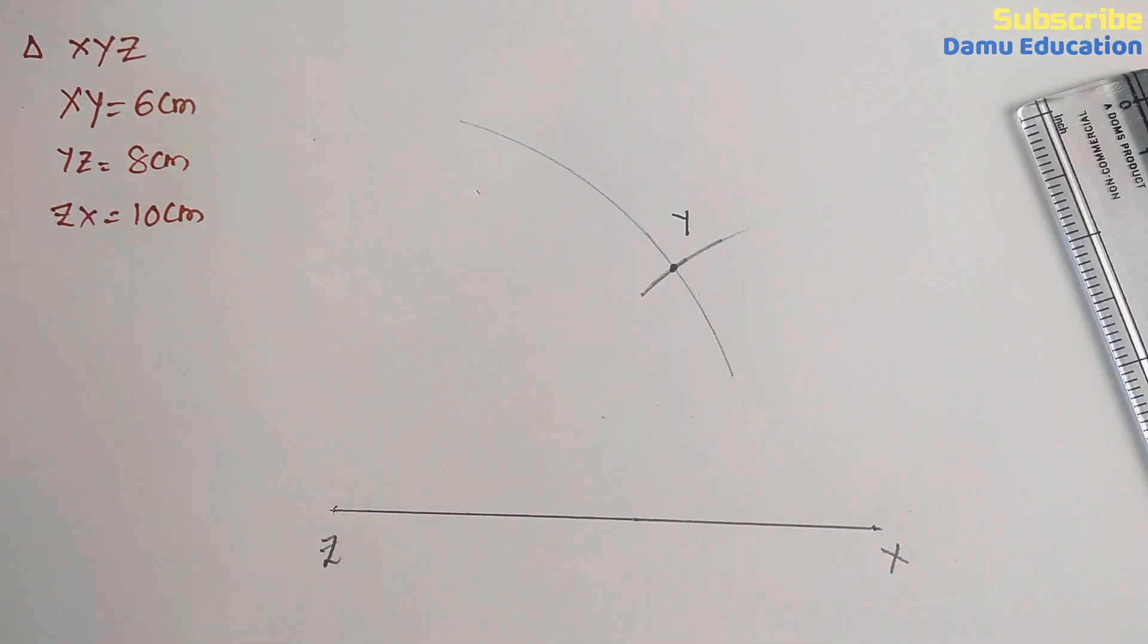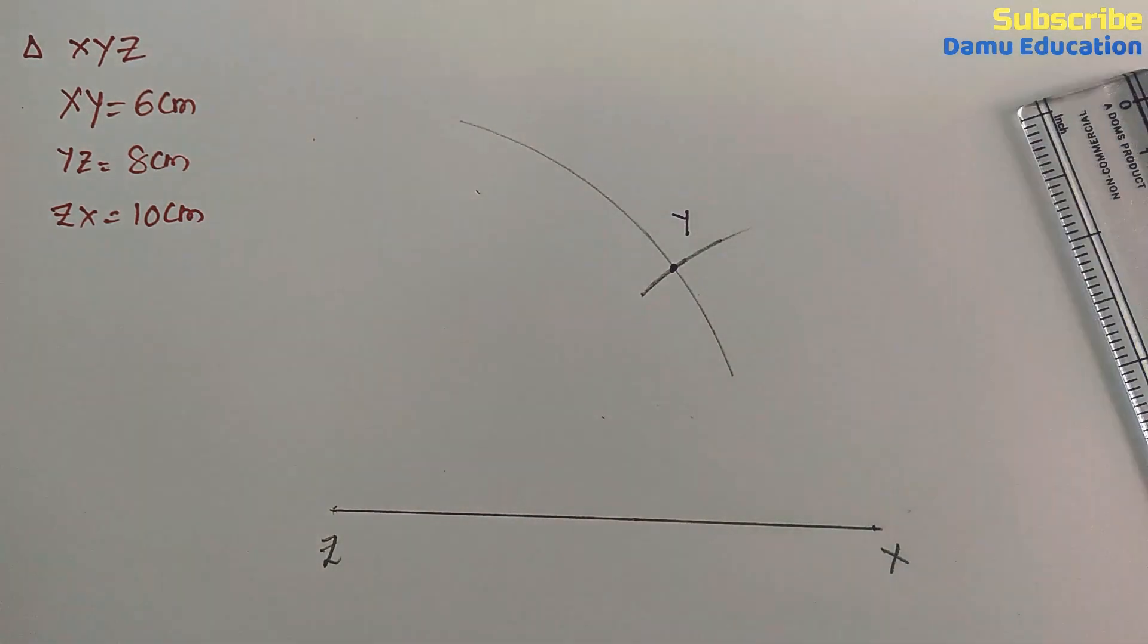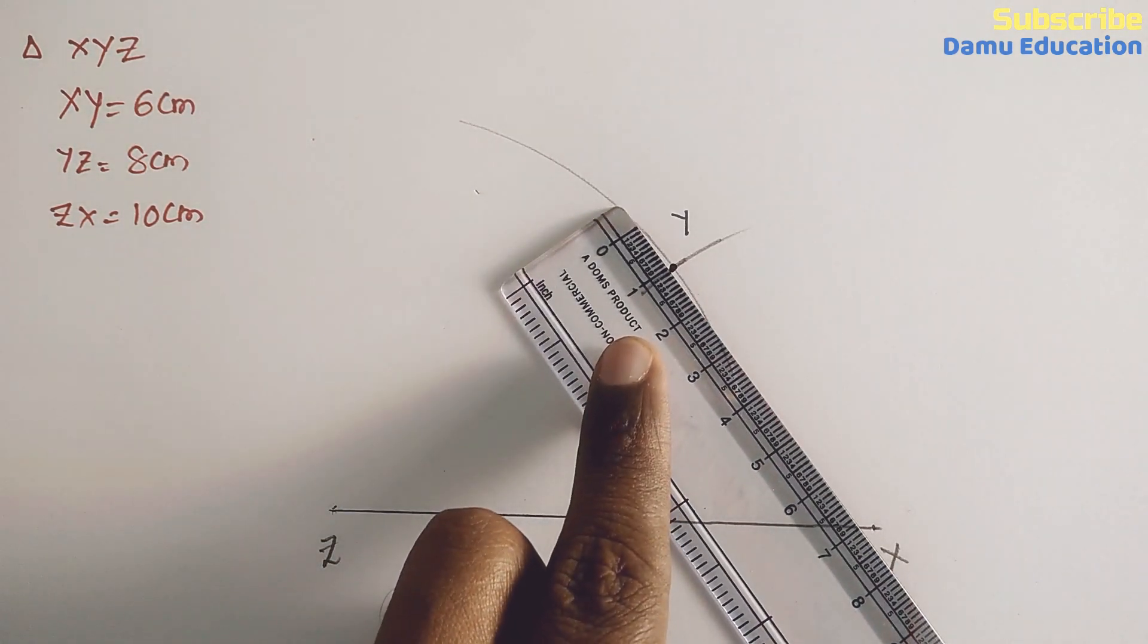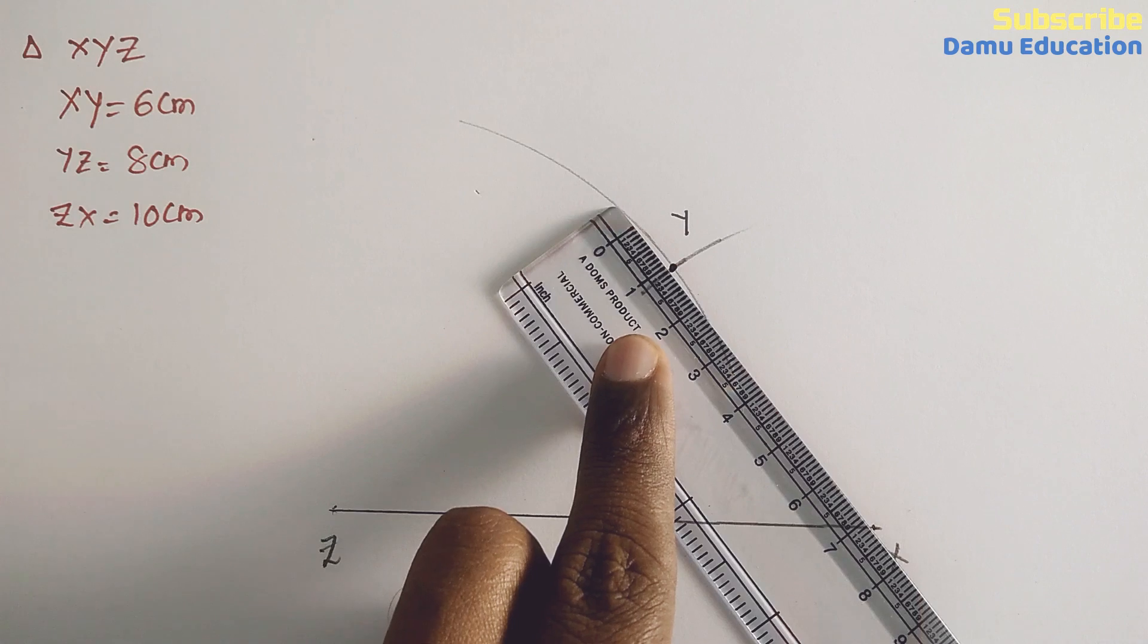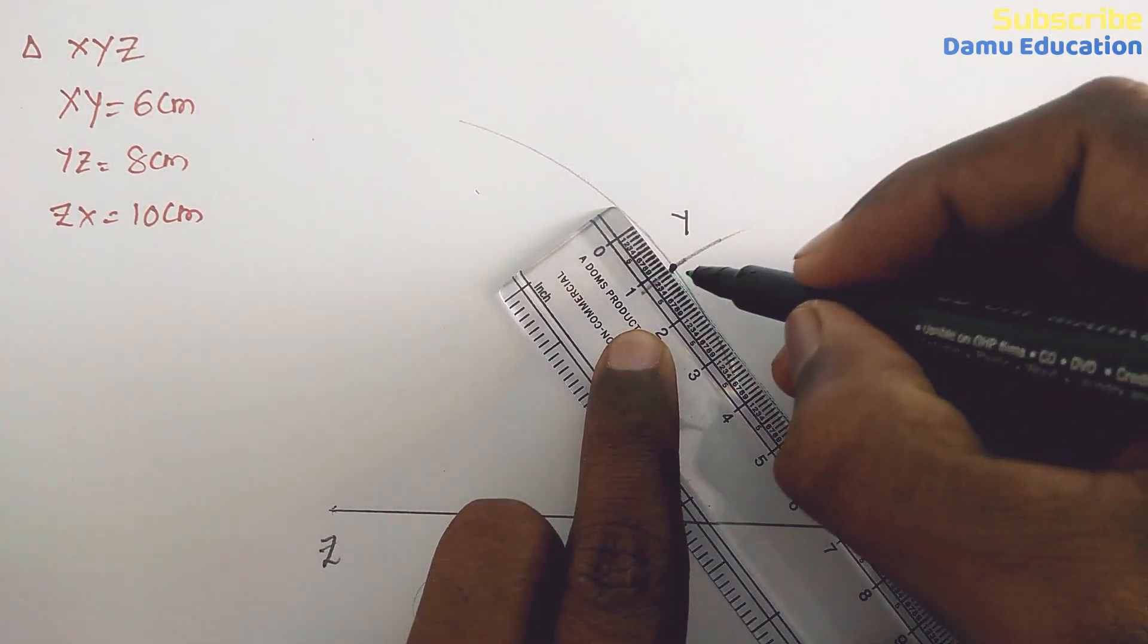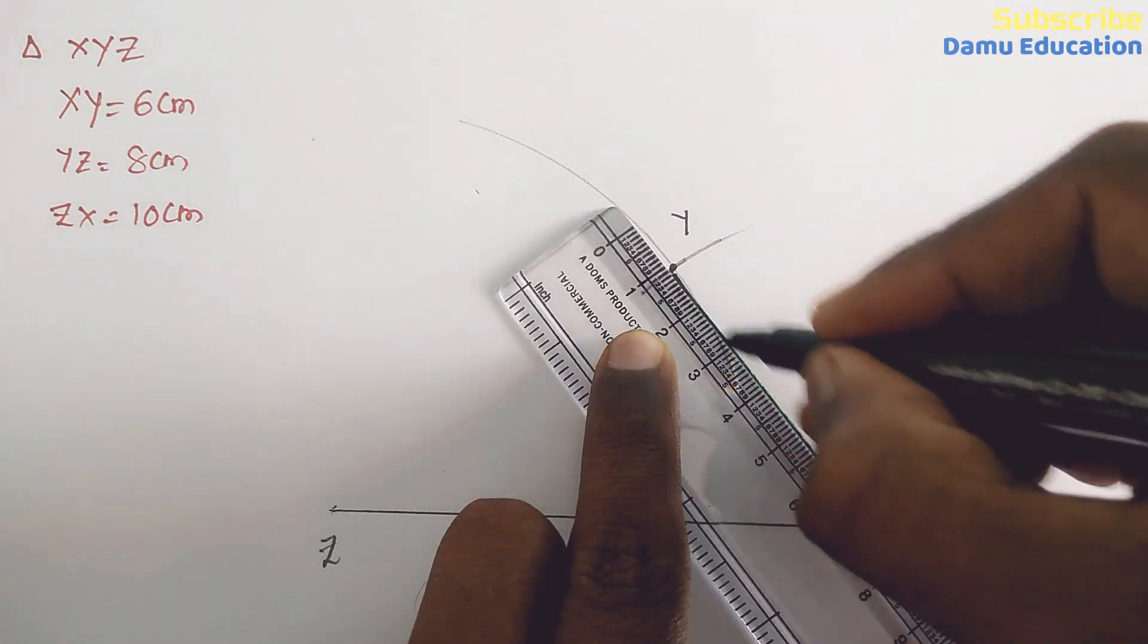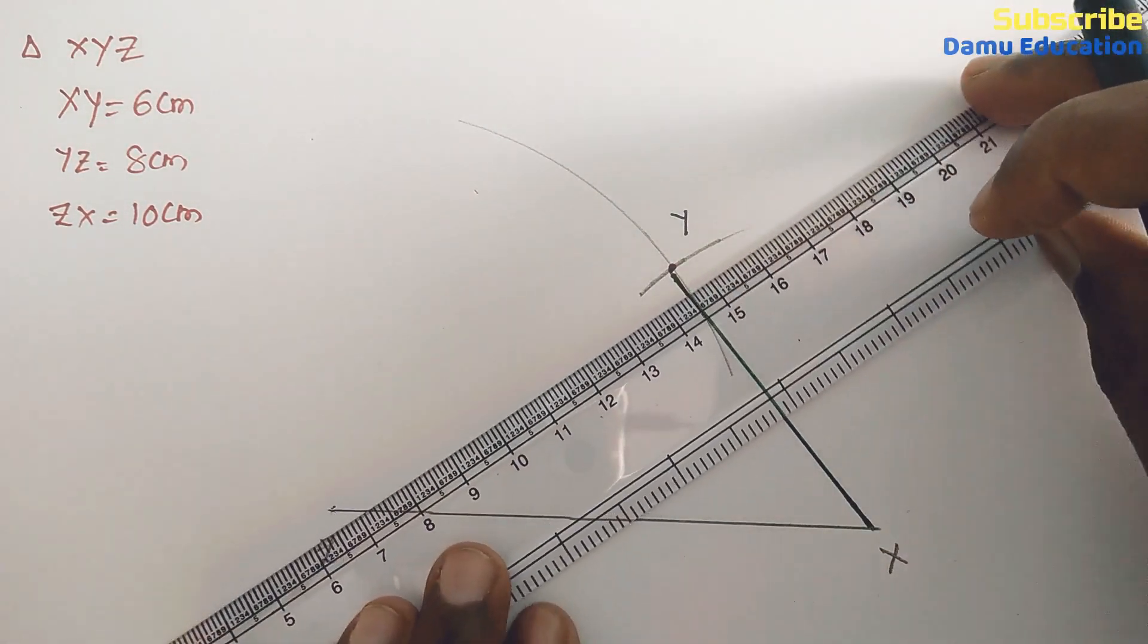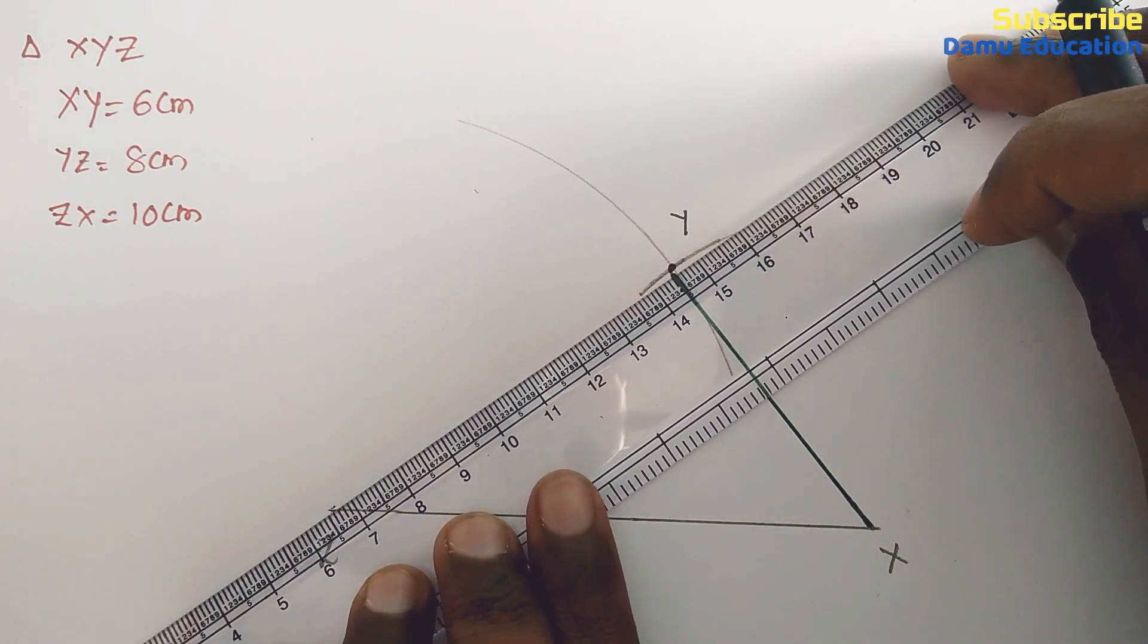That point is Y. Then join YX and YZ. So triangle XYZ is constructed.